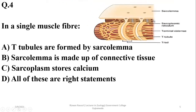In a single muscle fiber, T-tubules are formed by the sarcolemma. Sarcolemma is not made up of connective tissue — it's a cell membrane. Sarcoplasm stores calcium is a wrong statement; sarcoplasm is the cytoplasm, while calcium is stored inside the sarcoplasmic reticulum. So alpha is the right answer.